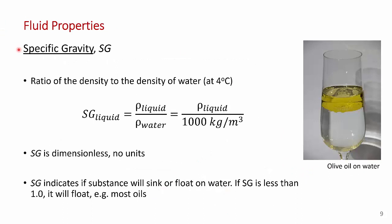We're going to be using specific gravity in this course. Specific gravity is just the ratio of the density of the liquid to that of water, and by standard it's taken at 4 degrees C. Four degrees C for water is the maximum density point — water has this unusual property of a maximum density at 4 degrees C, which is exactly 1000 kilograms per cubic meter. So if the specific gravity of a liquid is less than one, it's less dense than water and it floats. Here I've put some olive oil in a glass — the specific gravity of olive oil is about 0.9, so it floats on top of water.